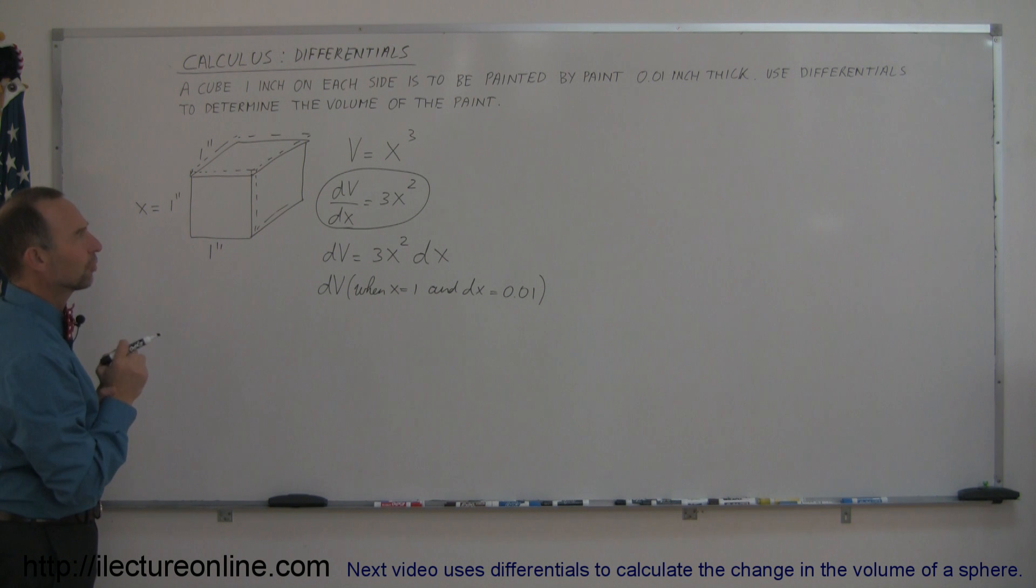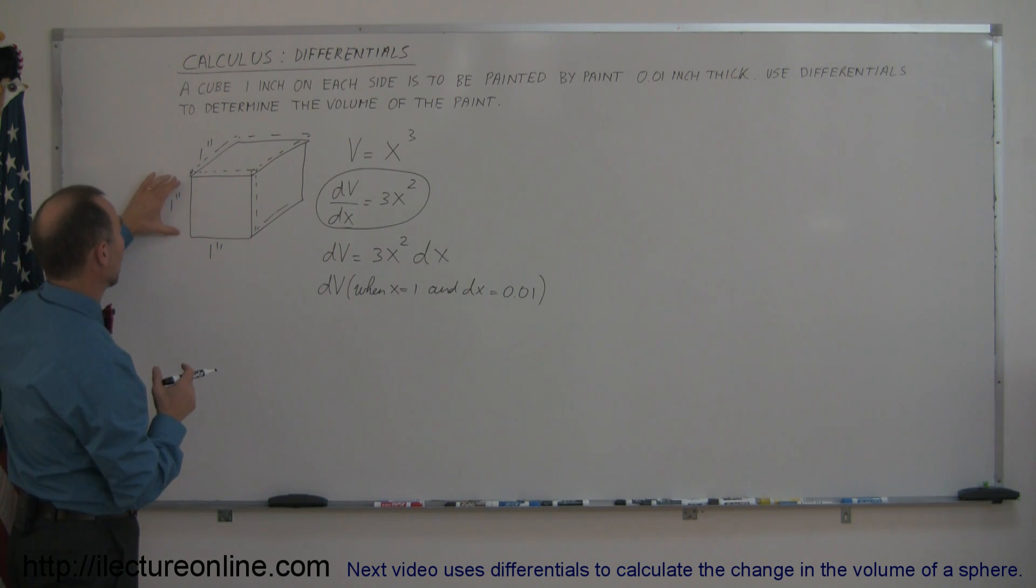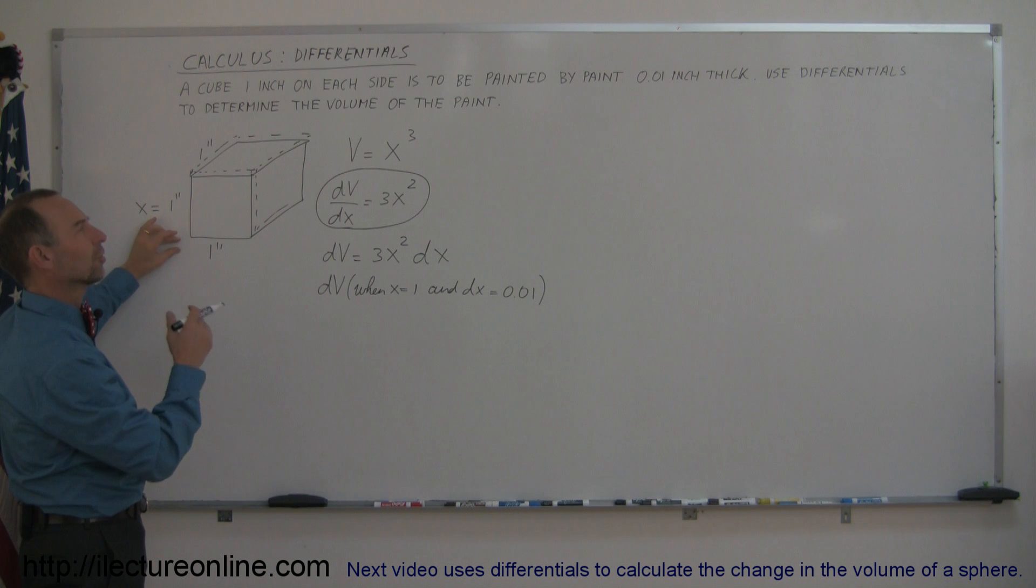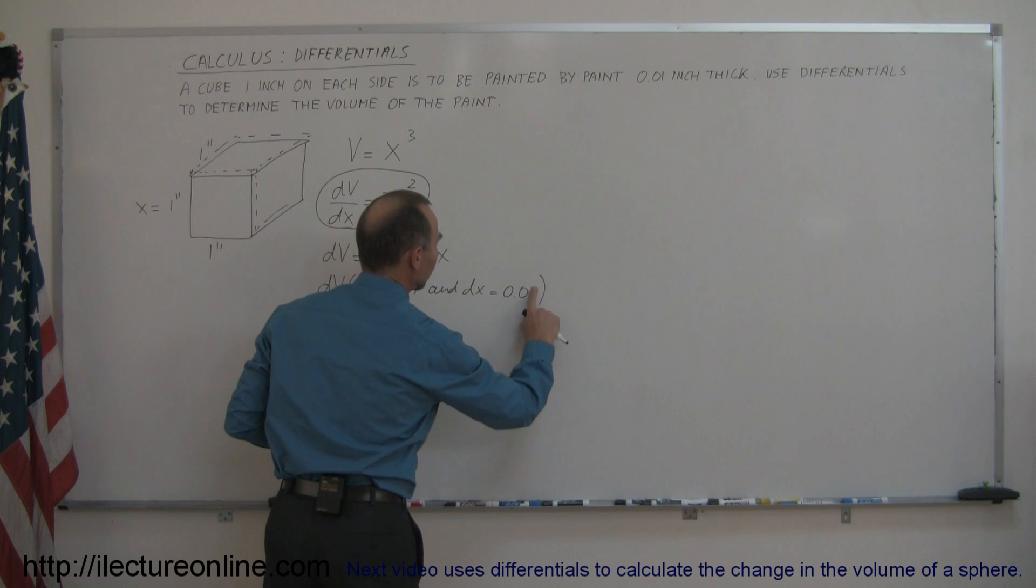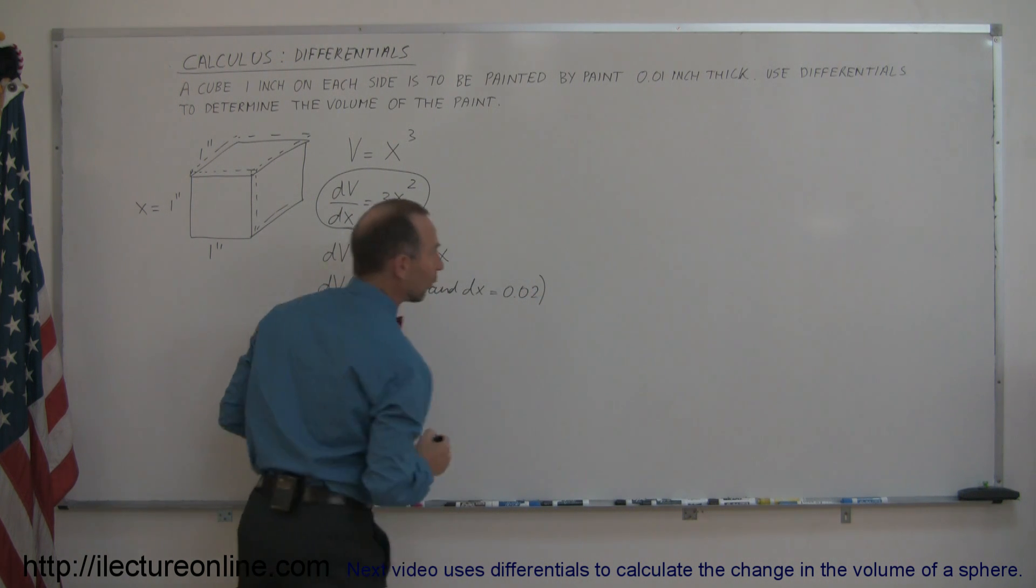Now we've got to think about that just for a moment. Should I use 0.01 for x? Because notice that if I paint it on the top and the bottom, the left and the right side, and the front and the back side, then x really doesn't change by 0.01, it actually changes by 0.02. Because we have 1 inch plus 0.01, 0.01, so my dx then changes by 0.02.